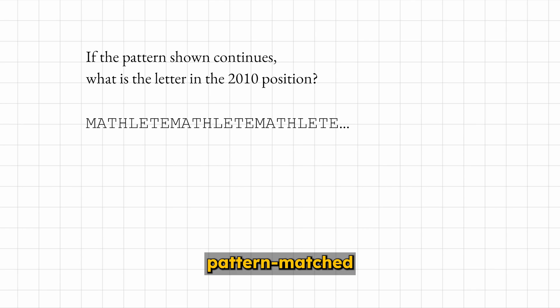Many math problems can be pattern matched to things you've seen before. This problem seems complicated, but it's actually a simple division and remainder problem. There are two things you need to do to solve it quickly. First, you'll notice that Mathlete has 8 letters in it, so every multiple of 8 is the letter E.